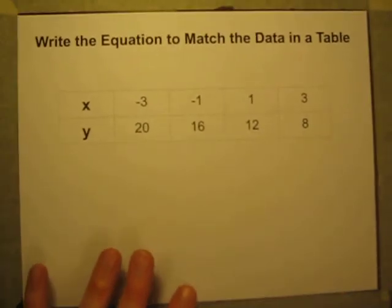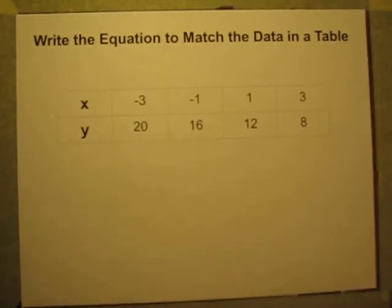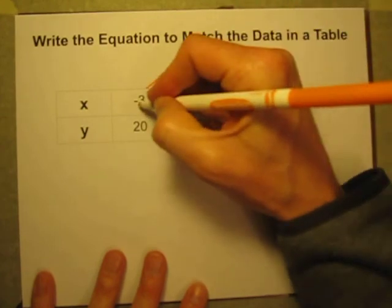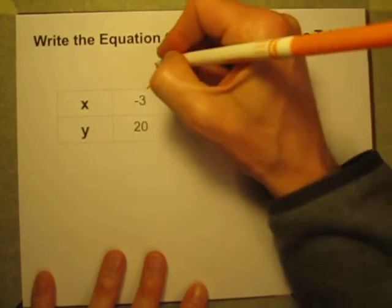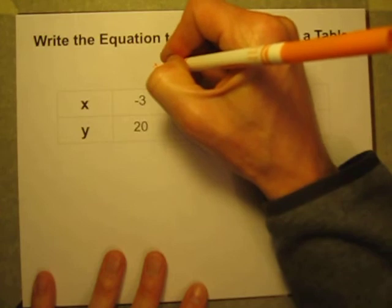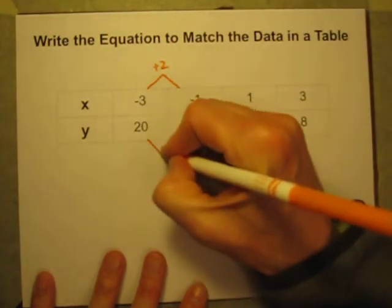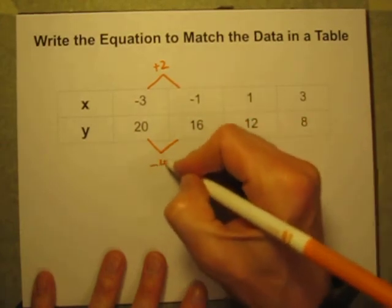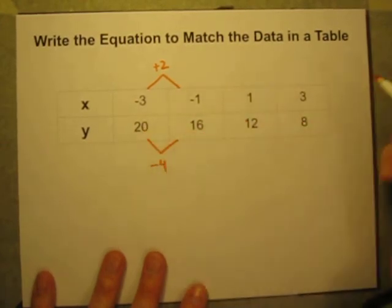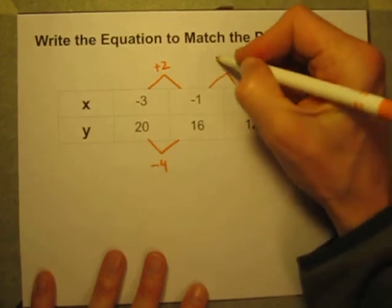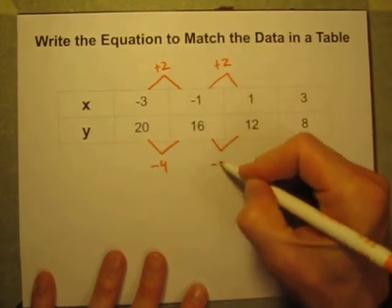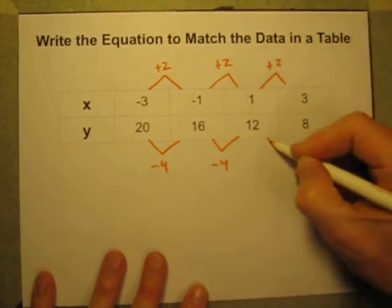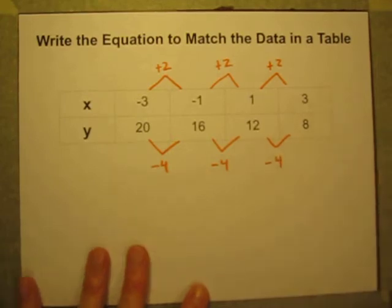Again, let's confirm that this is a linear relationship. Let's make sure there is a constant rate of change. And it looks like here x is going from negative 3 to negative 1, which is an increase of 2. And when I see an increase of 2 x's, it looks like the y's are decreasing by 4. 20 minus 4 is 16. I'm adding 2 x's, subtracting 4 y's. When I add 2 more x's, it looks like I lose 4 more y's.